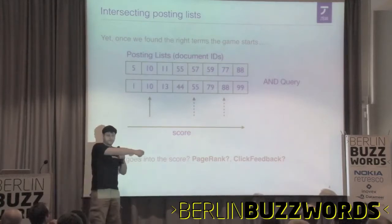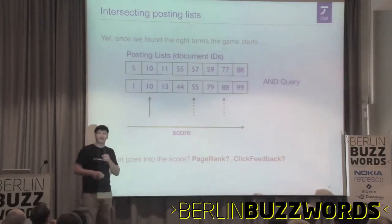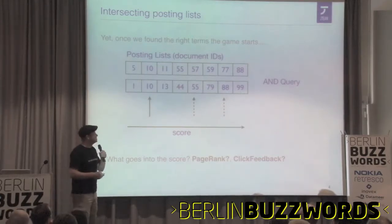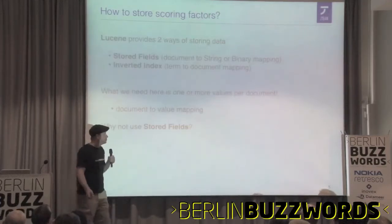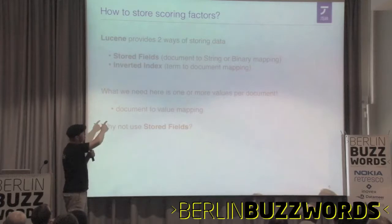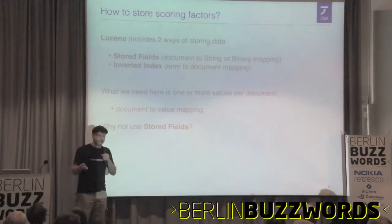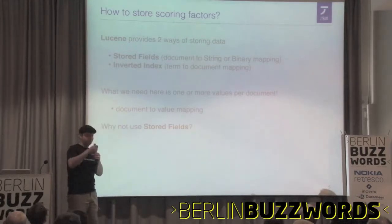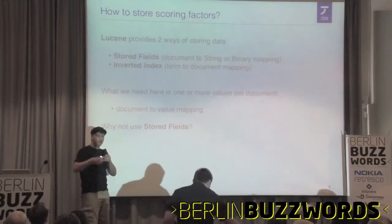There's also click feedback — I noticed a couple of Nokia guys want to incorporate click feedback. Currently there are two possibilities: one is a stored field, and one is putting it in the inverted index. The problem is that the inverted index is not a document-to-value mapping — it's a value or string to document mapping. But at query time you need these values: you get the document ID and need the value for it.